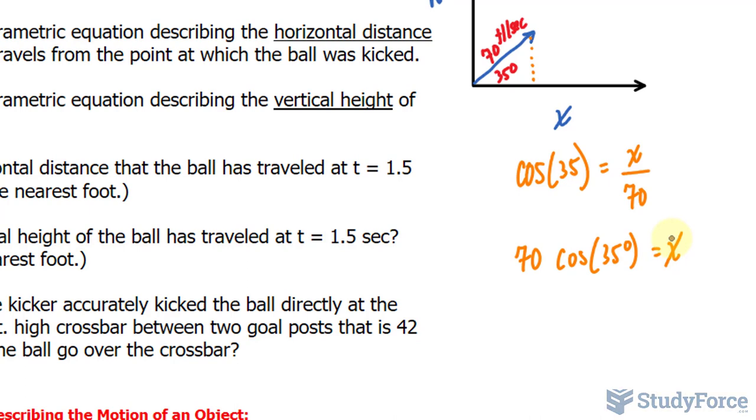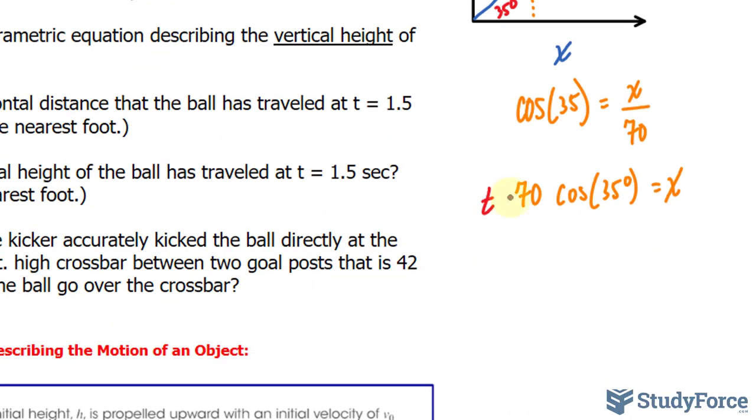X is not only dependent on the angle and initial velocity, it's also dependent on the amount of time that has passed by. So I'll take this value and multiply it by the time, t. The time is in seconds, and 70 has units feet per second. The seconds unit cancels out, which is why this formula works. The equation 70 times cosine 35 times t is the answer for part A.